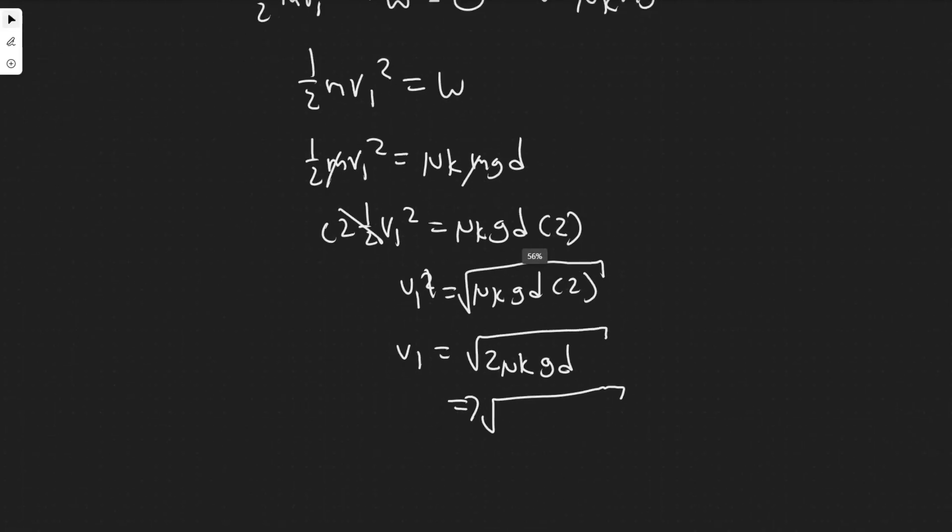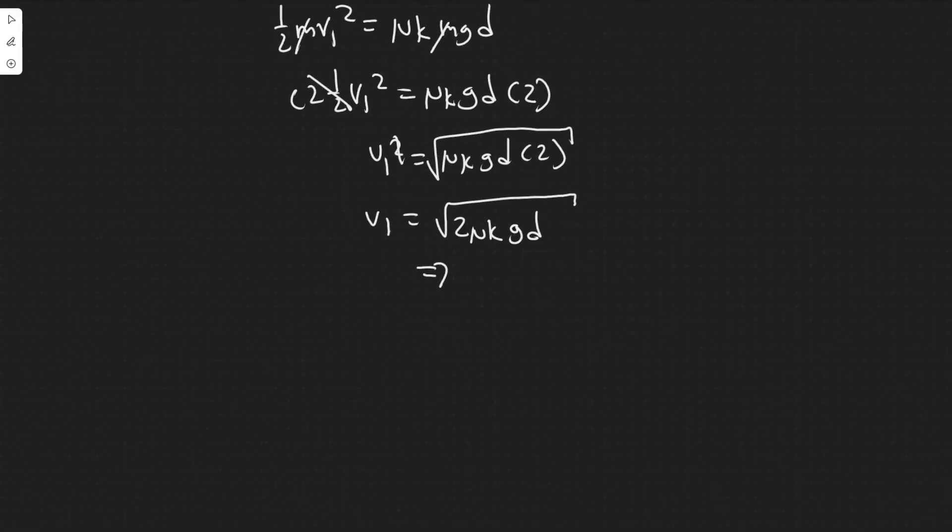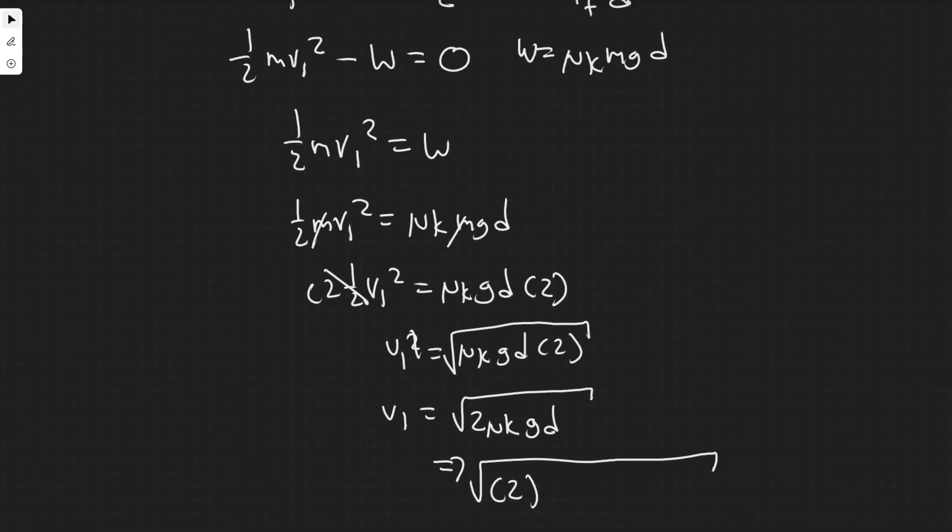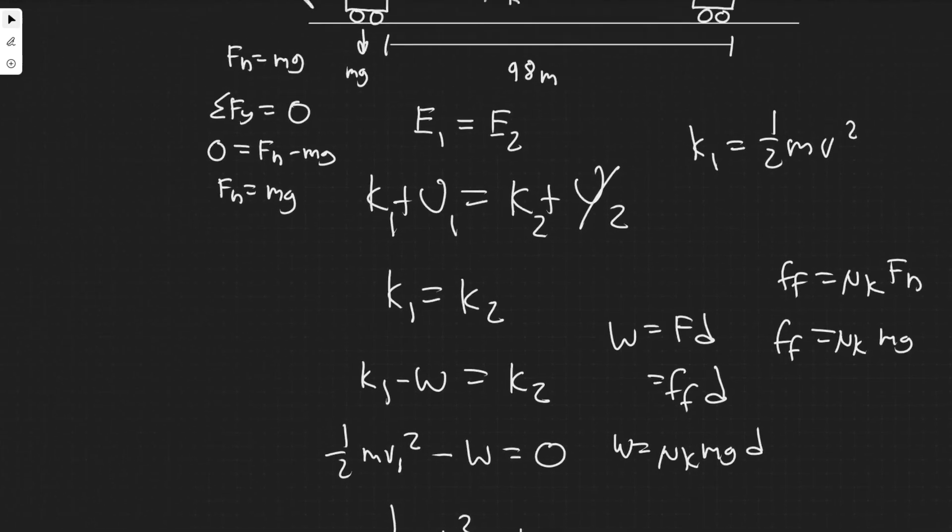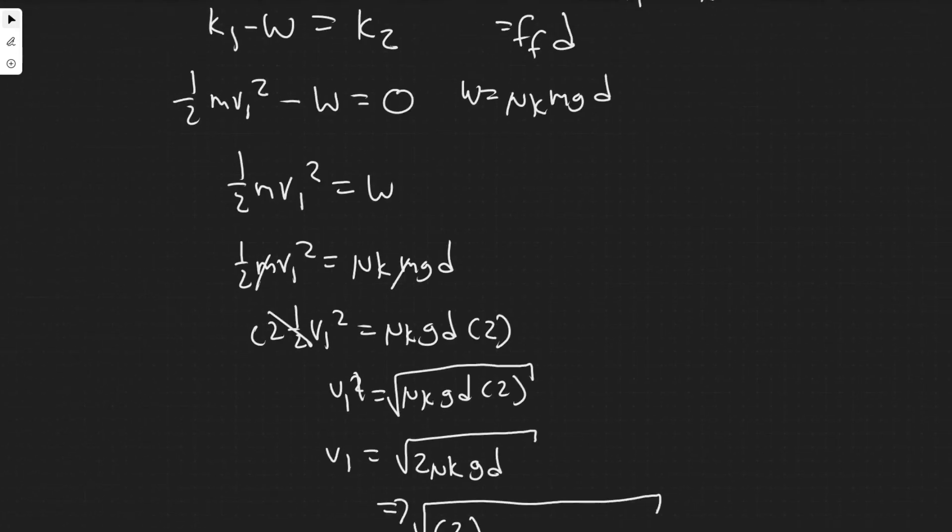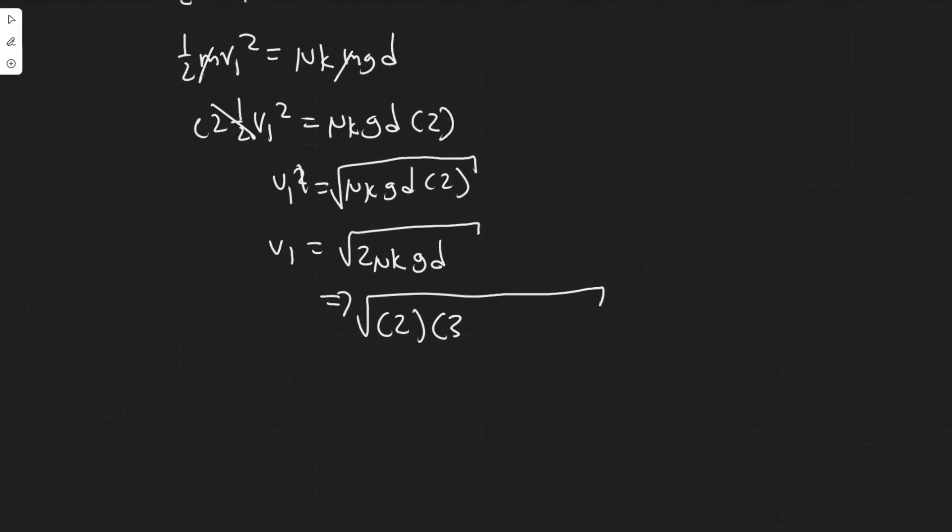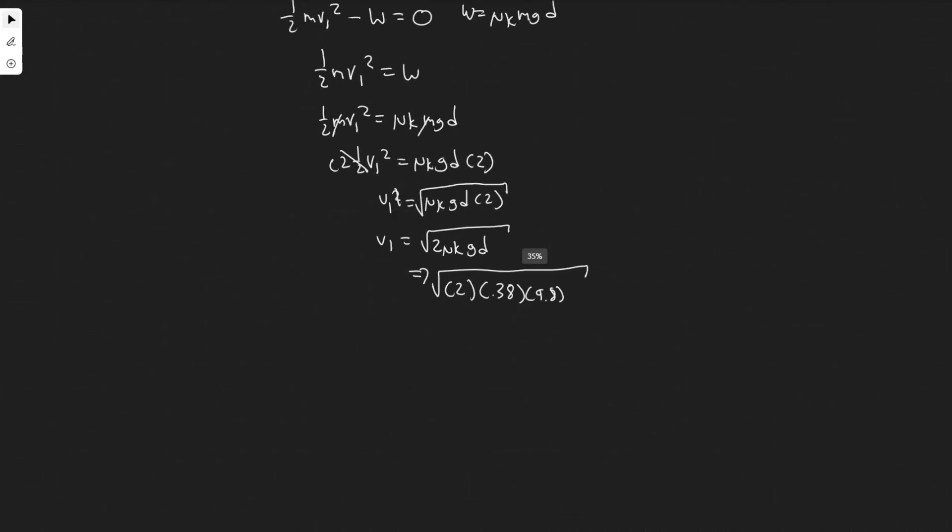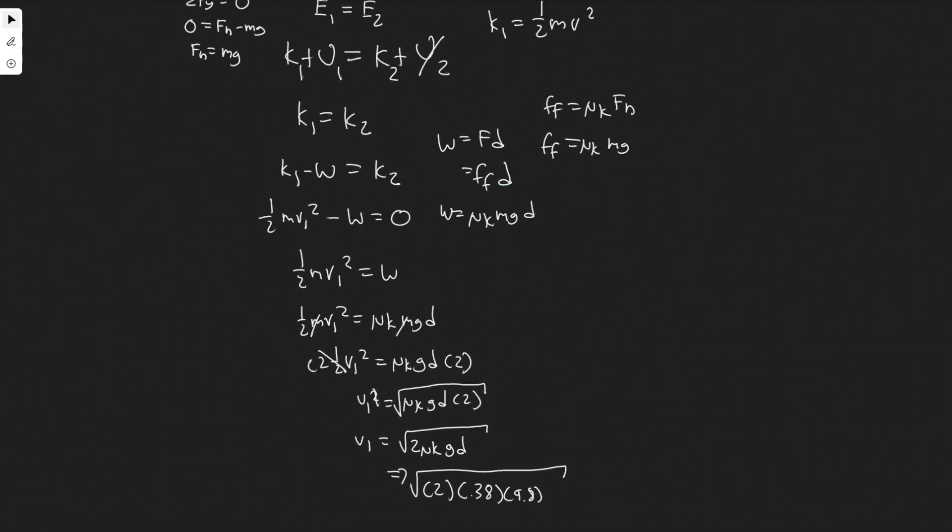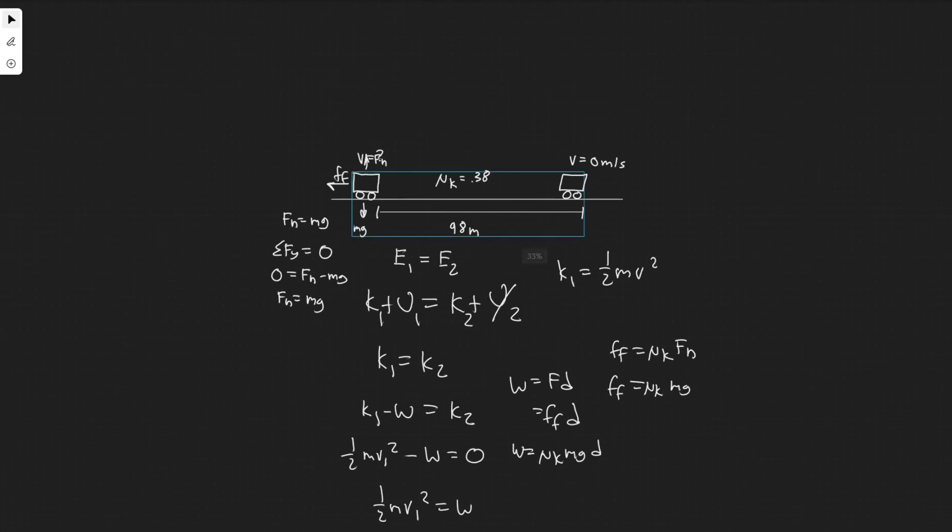Let me plug them in here. We have √(2·μk·g·d). The coefficient of kinetic friction μk is 0.38. g is the acceleration due to gravity, a constant value of 9.8. Then we multiply by the distance. The distance being traveled is 98 meters. This distance comes from the work formula, force times distance, and the force being applied is friction through this entire interval from the brake.